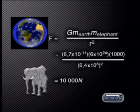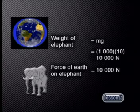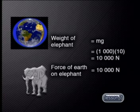When we work this out, we find that the Earth attracts the elephant with a force of about 10,000 newtons. What do you think an elephant weighs? Yes, it weighs about 10,000 newtons, which is also the magnitude of the force of the Earth on the elephant.